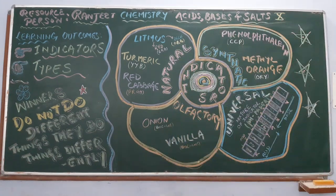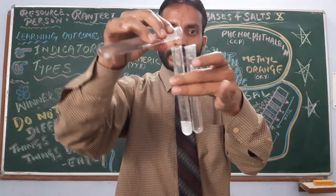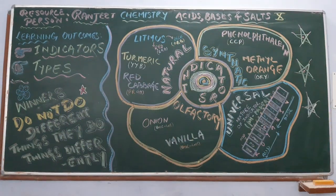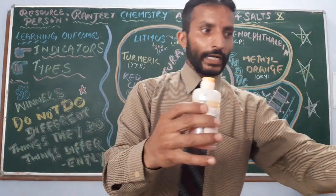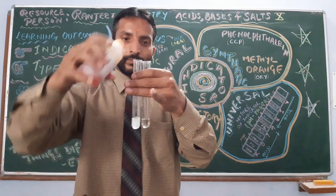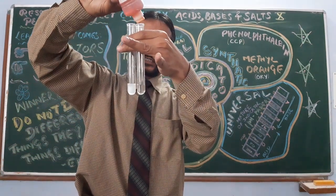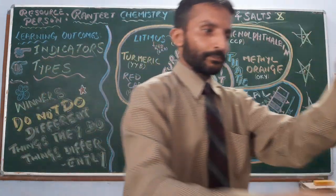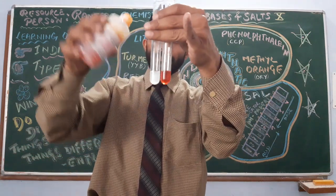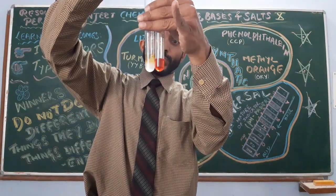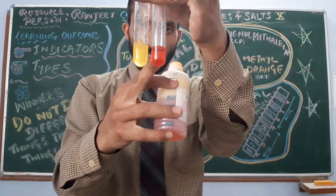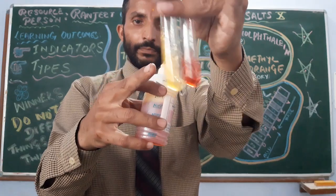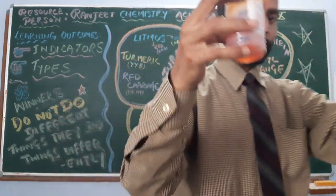Let us see practically. Again, acid and base — this is base, this is your acid. Now methyl orange — in acid it is red-orange. But in base it becomes yellow. So: in acid — red-orange; in base — yellow. This is about methyl orange.